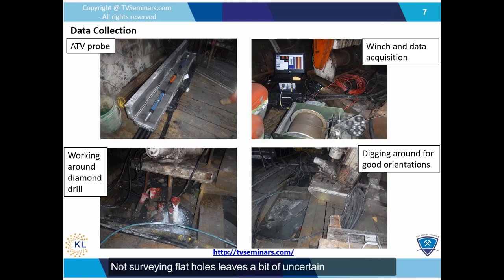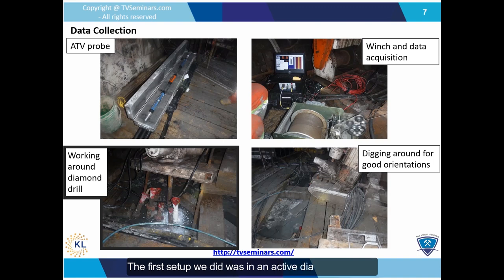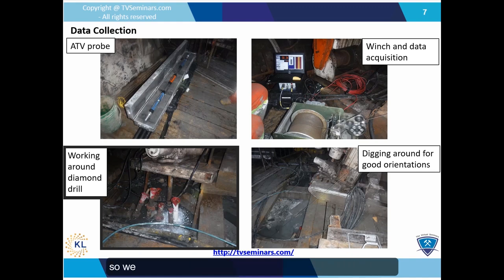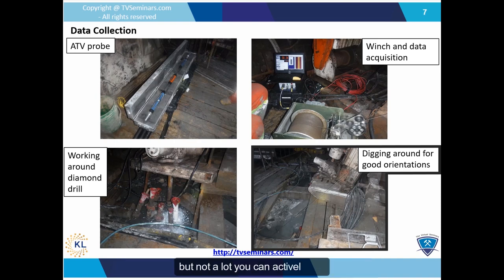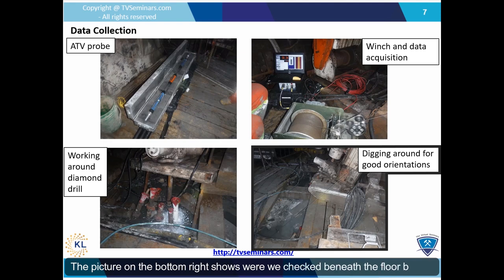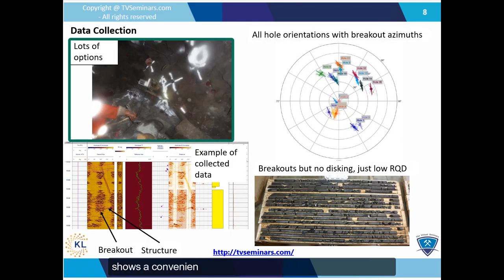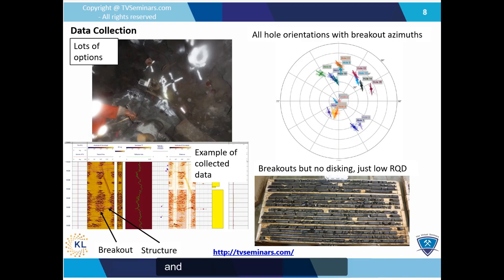Not surveying flat holes leaves a bit of uncertainty in results, but we surveyed enough orientations that we got something reasonable. The first setup was in an active diamond drill bay — the drill was shut down but we still had to work around it. The ATV probe is about 5 feet long and rigid, so we couldn't fit it into all the holes. We ended up having to move the drill to get more hole orientations. Holes in the floor quickly get covered in water or blocked with cuttings, so we checked beneath the floorboards and dug around for holes in different orientations.